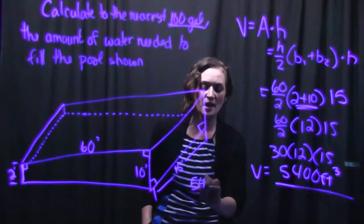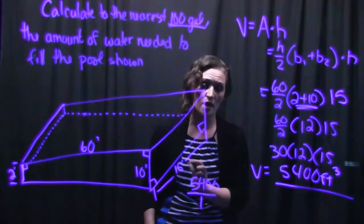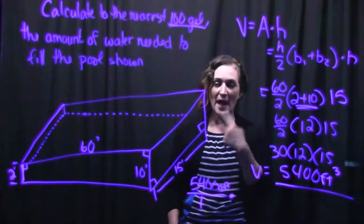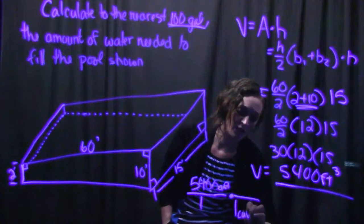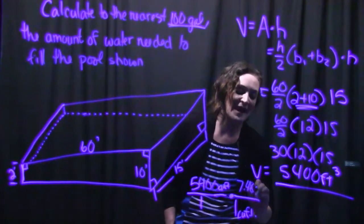So what we do is we take our 5,400 cubic feet and we put it over 1. So what we're going to do is we're going to multiply our 5,400 cubic feet by our conversion that says that 1 cubic foot is equal to 7.48 gallons.